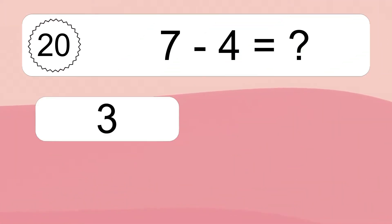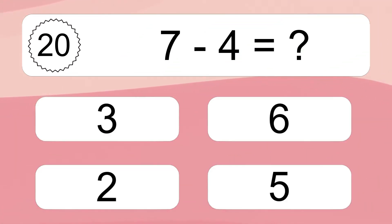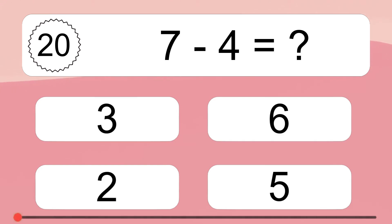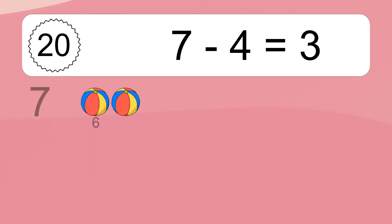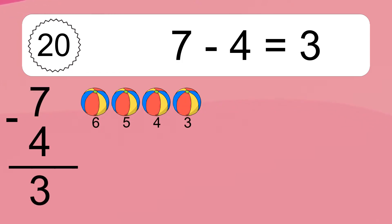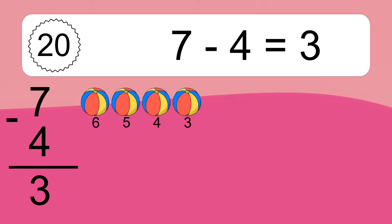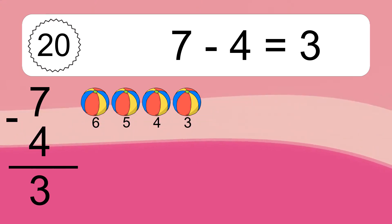7 minus 4 equals what? 7 minus 4 equals 3. Let's count it: 6, 5, 4, 3. We'll be right back.